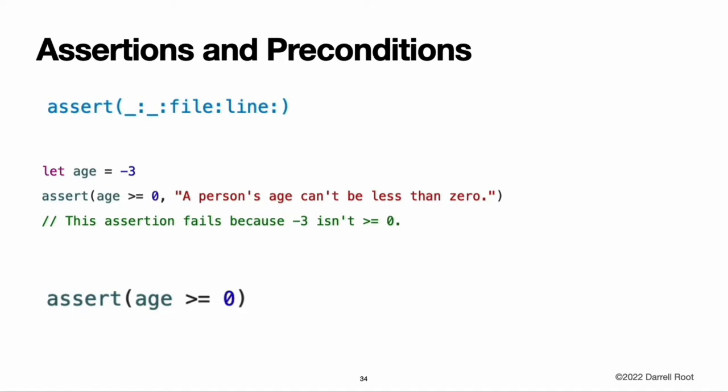In addition to verifying your expectations at runtime, assertions and preconditions also become a useful form of documentation within the code. Unlike the error conditions discussed in error handling above, assertions and preconditions are not used for recoverable or expected errors. Because a failed assertion or precondition indicates an invalid program state, there is no way to catch a failed assertion. Using assertions and preconditions is not a substitute for designing your code in such a way that invalid conditions are unlikely to arise. However, using them to enforce valid data and state causes your app to terminate more predictably if an invalid state occurs, and helps make the problem easier to debug. Stopping execution as soon as an invalid state is detected also helps limit the damage caused by that invalid state.